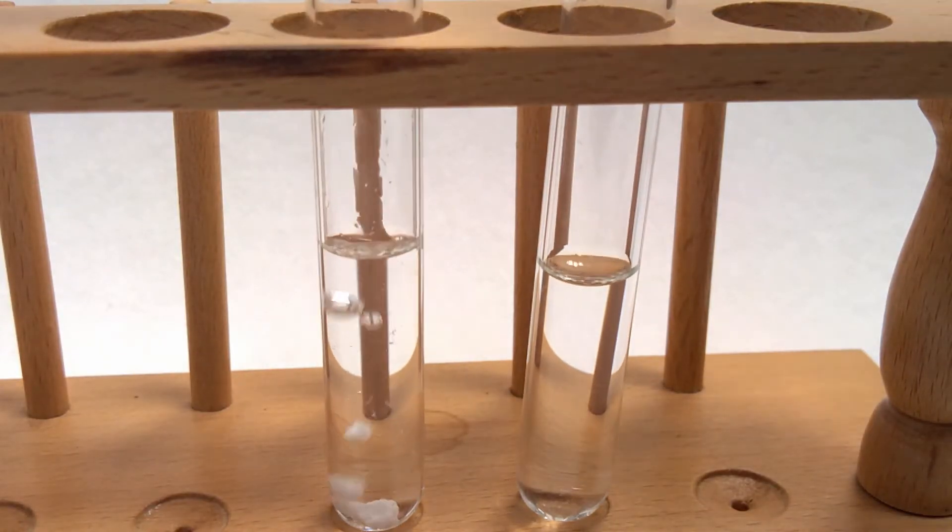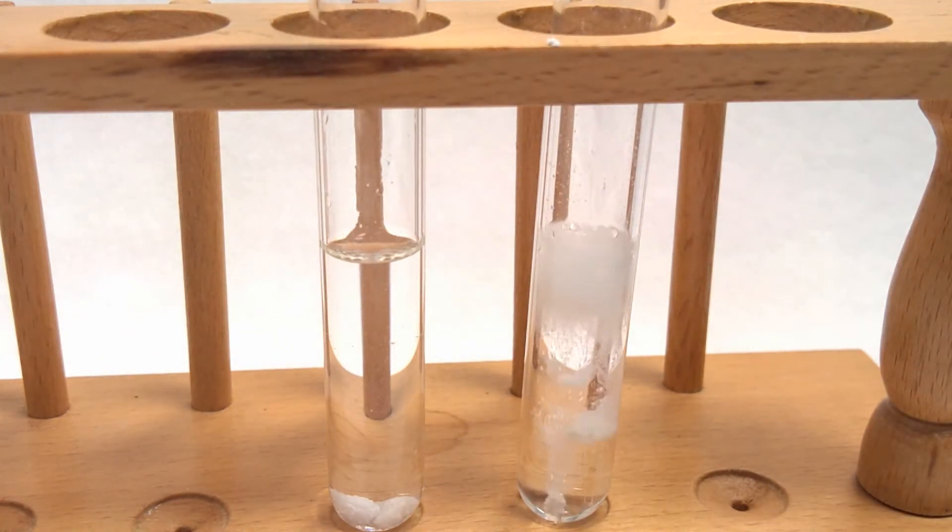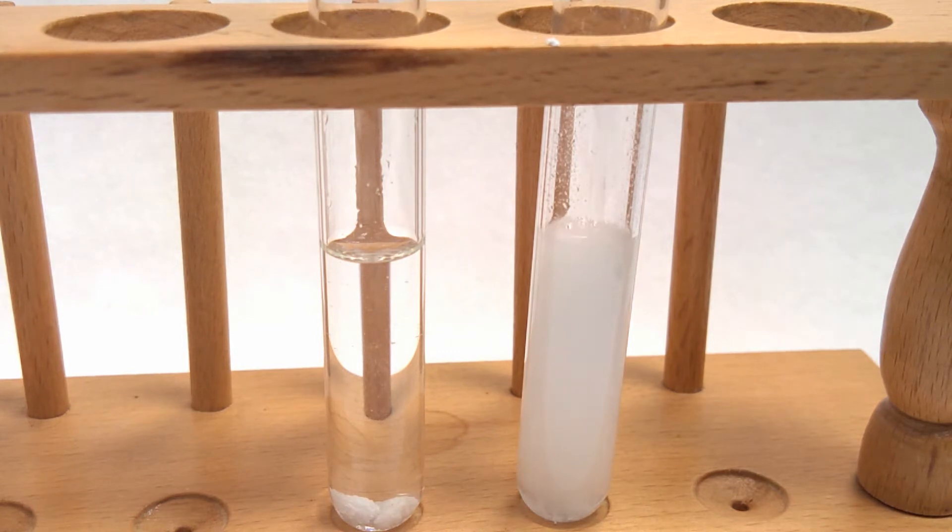Here's another example of the effect of particle size. The two test tubes both contain one molar hydrochloric acid. The one on the left has some marble chips added and the one on the right has some powdered calcium carbonate, chemically exactly the same. As you can see the powdered carbonate reacts much more rapidly.